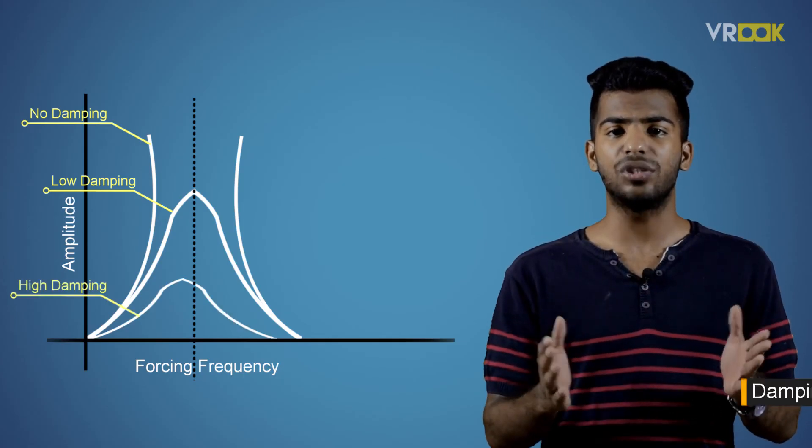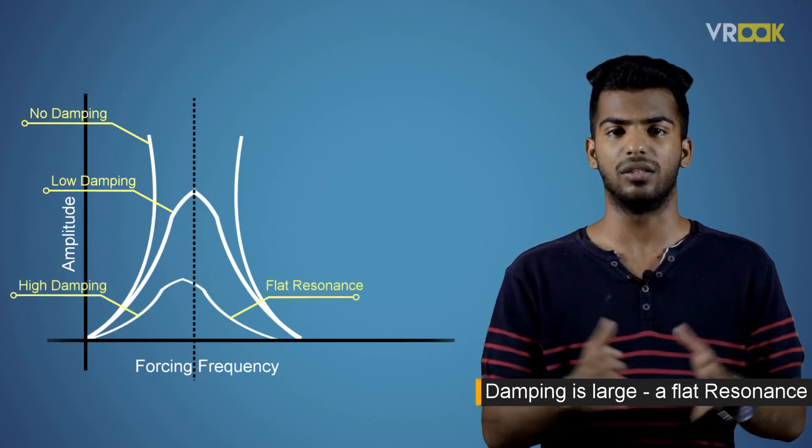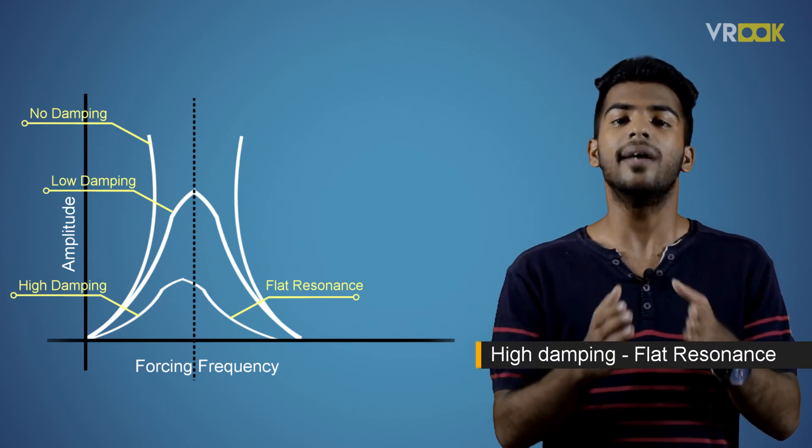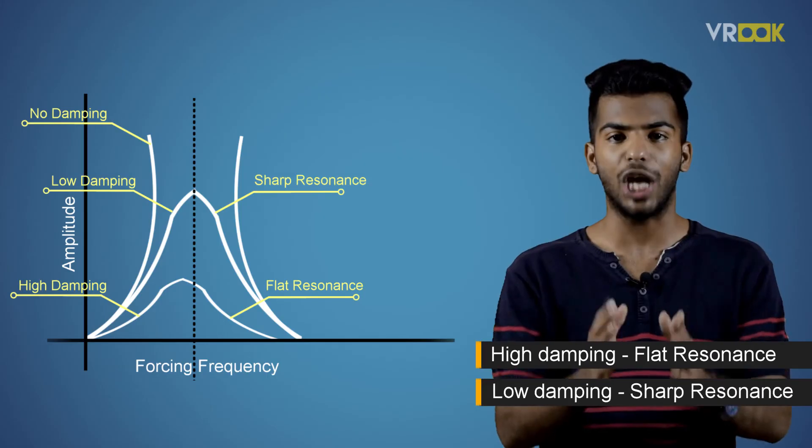If the damping is large, we get a flat resonance. So at high damping, we have flat resonance and at low damping, we have sharp resonance.